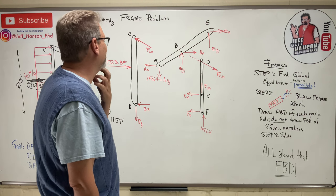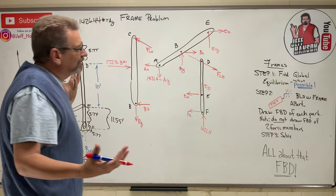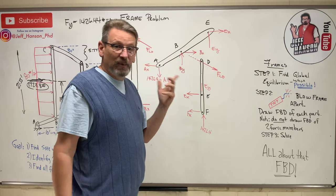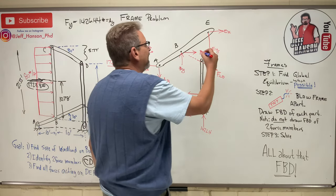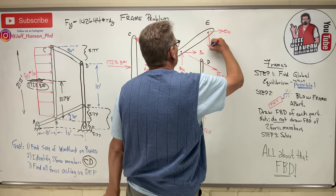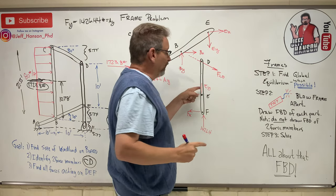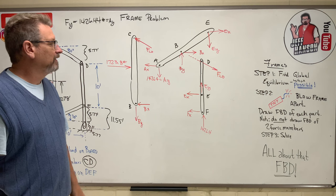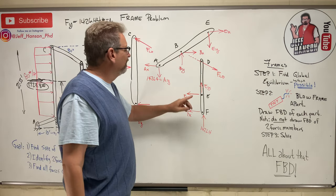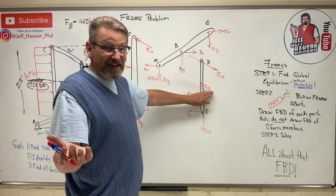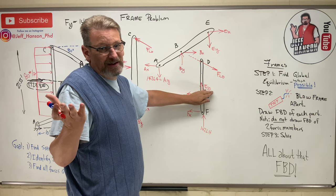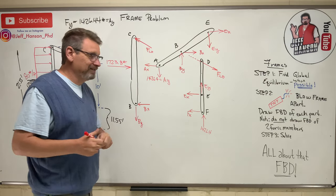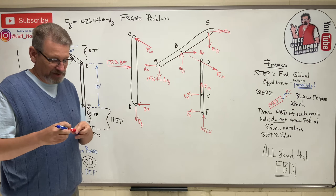For Ey, I'll just guess a direction — I'll say it goes down on the DEF member. That means on the other member it must go up, since they have to be opposite. If I solve Ey and get a negative answer, I guessed wrong and can fix it. Now I have three complete free body diagrams — make sure yours match closely before proceeding.